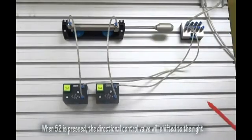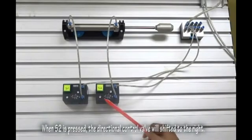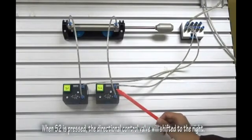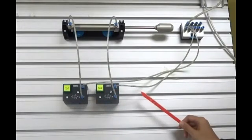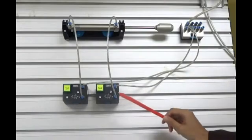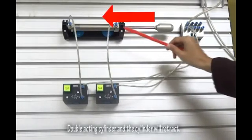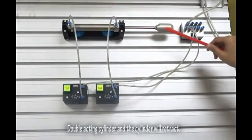When S2 is pressed, the directional control valve will shift it to the right. Double-acting cylinder will retract.